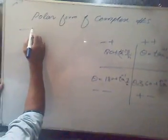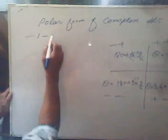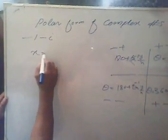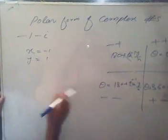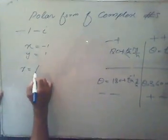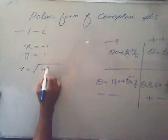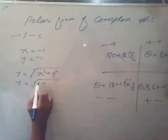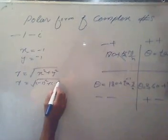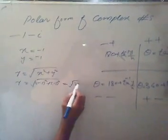Let's suppose I take minus 1 minus i. So if we see x is minus 1 and y is minus 1, so it lies in third quadrant. Again, r will be x squared plus y squared, so r will be minus 1 squared plus minus 1 squared, so it will be again under root 2.